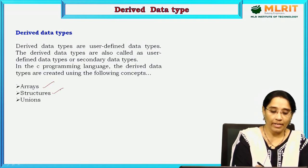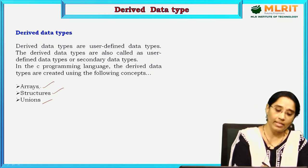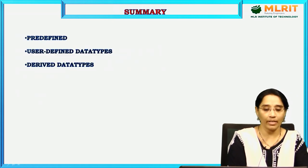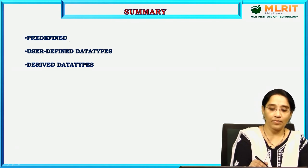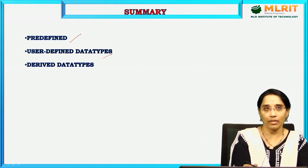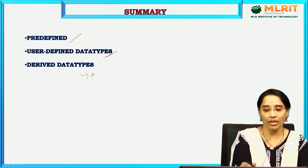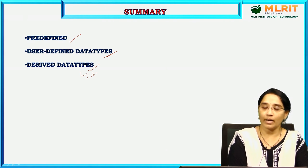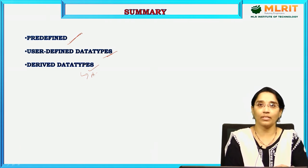Derived data types include arrays, structures, and unions. In this session, we have seen the predefined data types with sample programs, user-defined data types like enumerated type, and derived data types like arrays, unions, and structures. In the coming sessions we are going to see these two data types clearly. We have discussed these predefined data types. In the next session we will see the operators in C. Thank you.